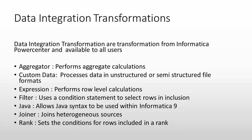The data integration transformations include: aggregator, custom data, expression, filter, Java, joiner, rank, and more. The aggregator transformation is used to perform aggregation functionality. The custom data transformation is used to process data in unstructured or semi-structured file formats, such as log files that are not structured like database tables and columns.